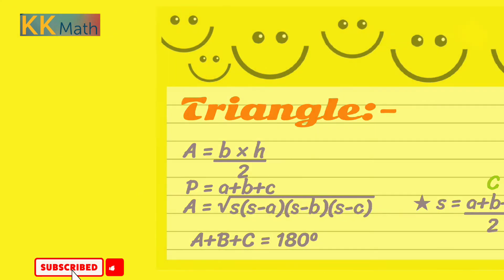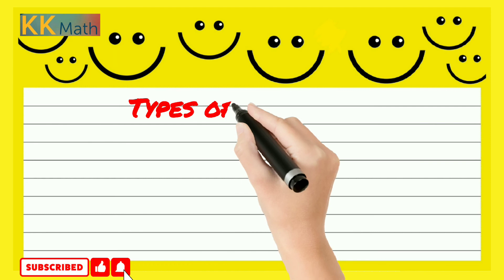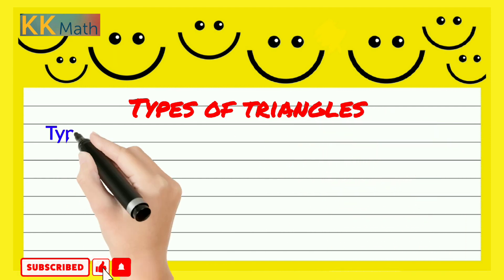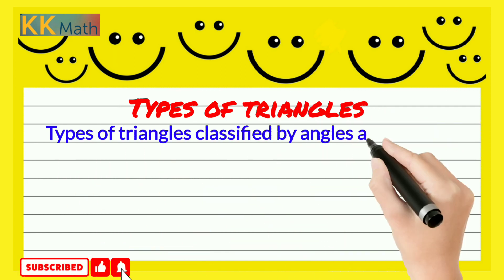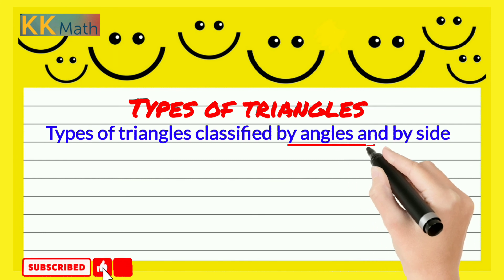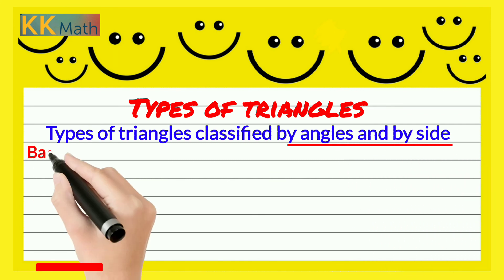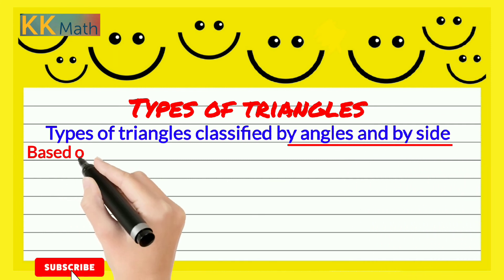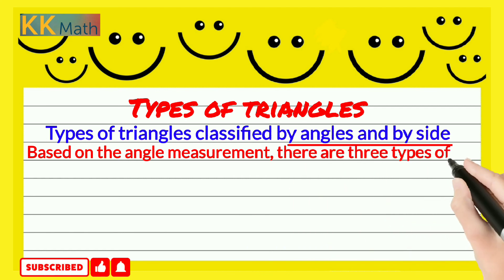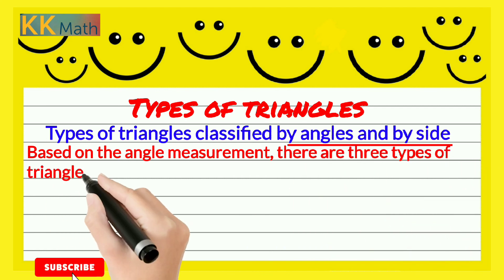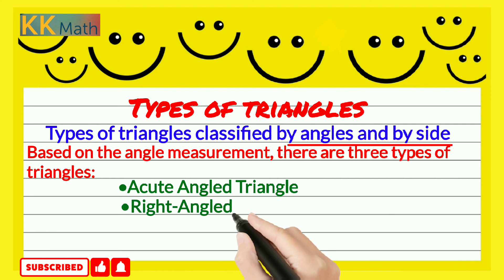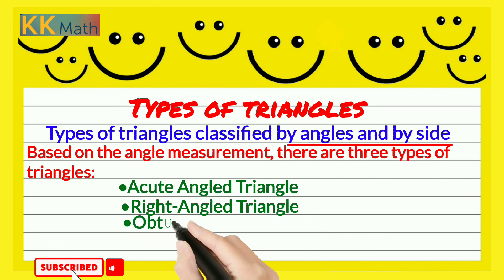Types of a triangle: triangles are classified by angle and by side. Based on the angle measurement, there are three types of triangle: the first one is acute angle triangle, right angle triangle, and obtuse angle triangle. Let us discuss each type in detail.